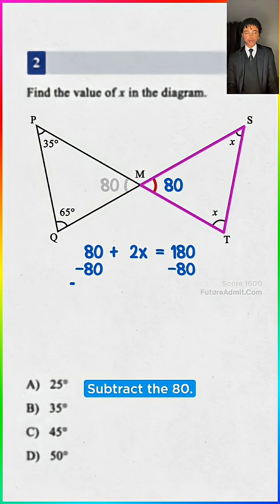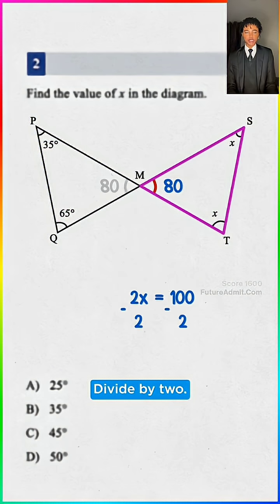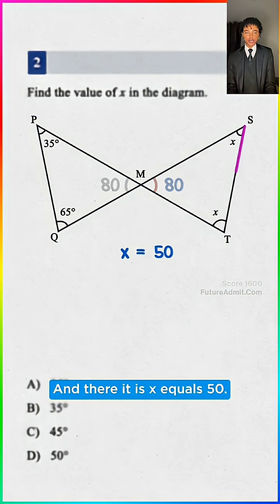So 80 plus 2x equals 180. Subtract the 80, so 2x equals 100, divided by 2, and there it is! X equals 50, it's d!